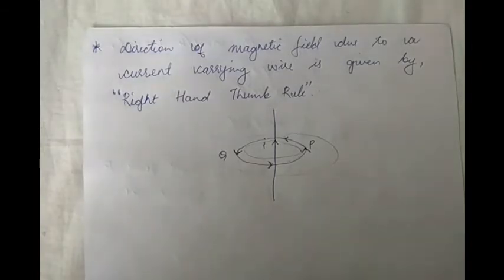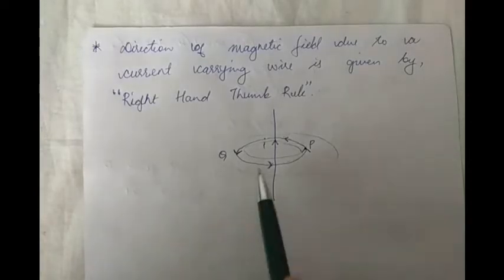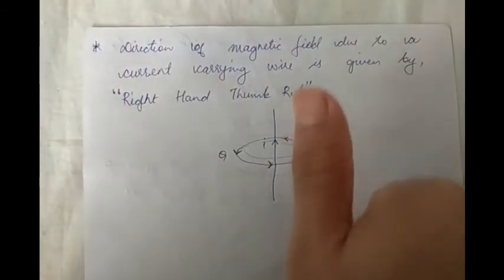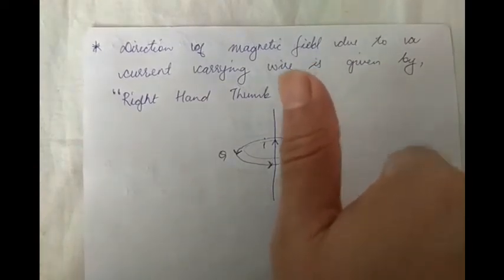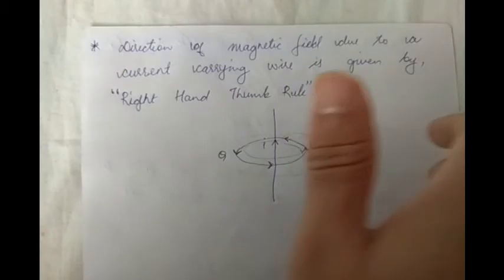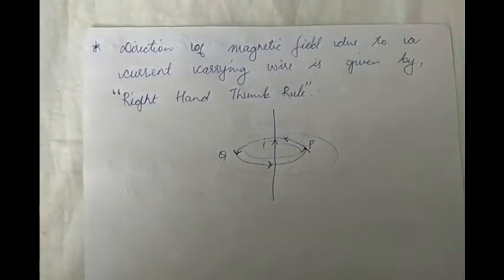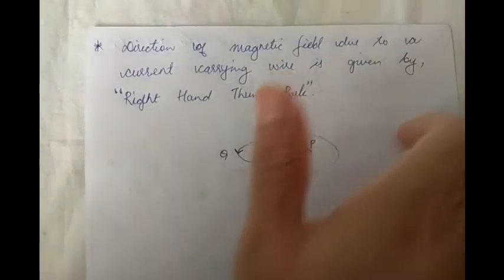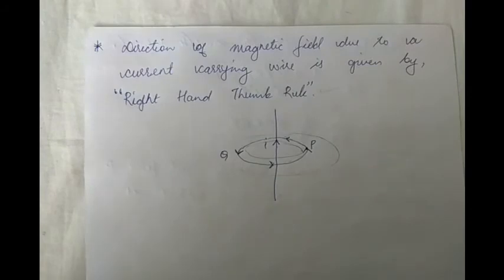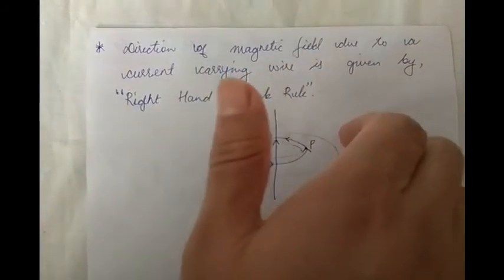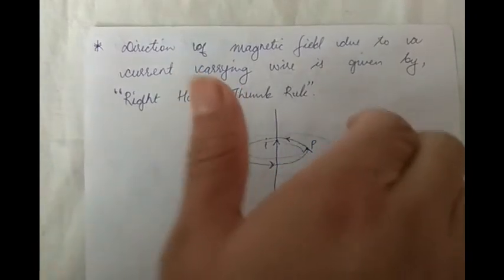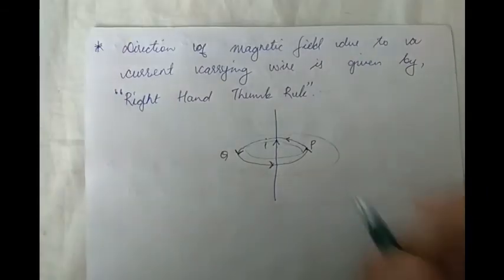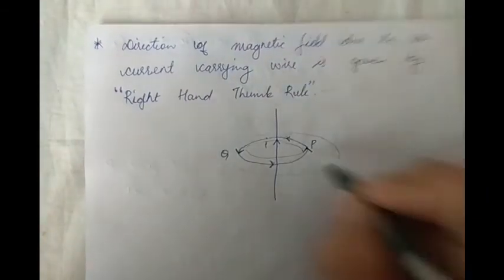The right-hand thumb rule says that if the thumb of your right hand points in the direction of the current — in our picture the current is flowing in the upward direction — then the other four fingers point in the direction of the magnetic field. So if I want to find the direction of the magnetic field intensity at point P, the four fingers are pointing into the plane of the paper, so at point P the direction of the magnetic field is into the plane of the paper.